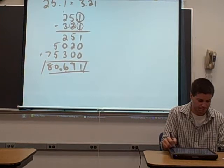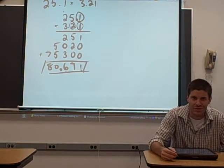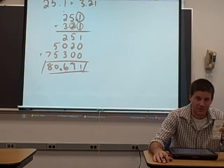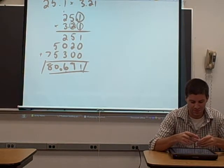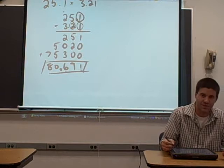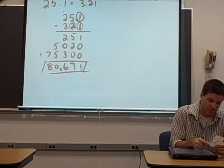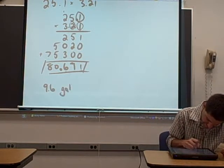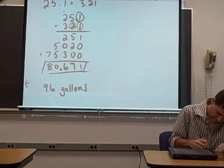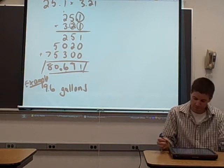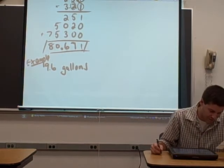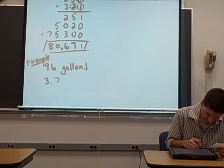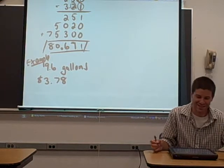How about an example that you can do? All we need for examples of when we might multiply decimals would be my gas station receipt from this morning. So I'm going to round a little bit. Let's say that I fill up my gas tank with 9.6 gallons of gas. This is our example. We have 9.6 gallons of gas that we're filling my car with. And the cost per gallon when I round is $3.78 per gallon.